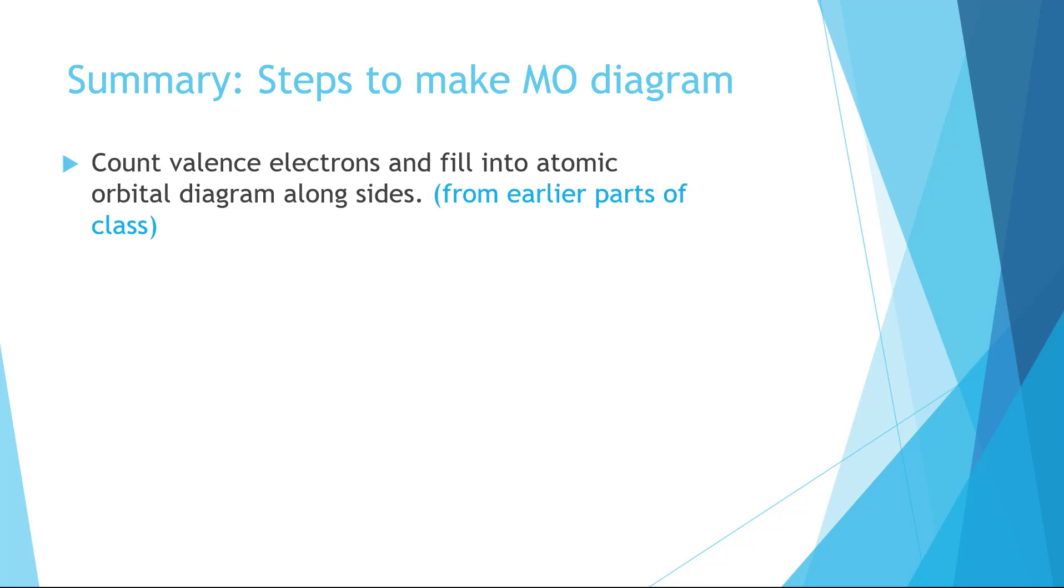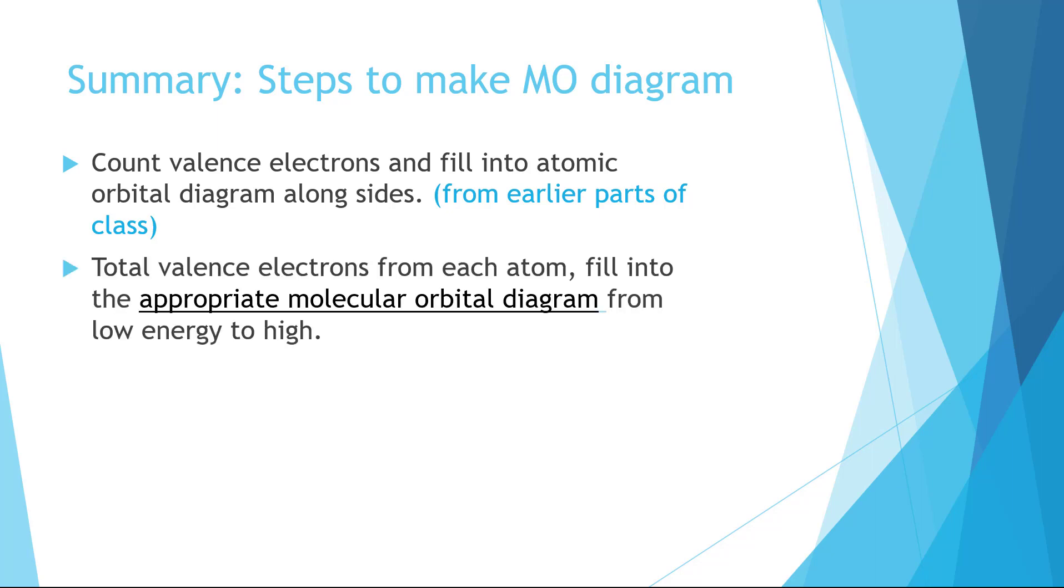Let's review what we did. We counted valence electrons and filled into atomic orbital diagrams along the sides. We did this earlier in the course. The new part was we took the total valence electrons from each atom and we filled that into the appropriate molecular orbital diagram from low to high. We filled according to the Pauli exclusion, Hund's and Aufbau principles that we learned about during atomic energy level diagrams.